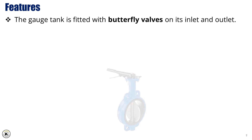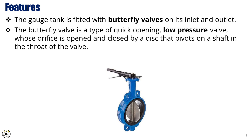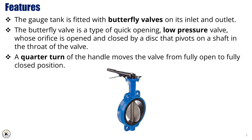The gauge tank is fitted with butterfly valves on both its inlet and outlet. The butterfly valve is a type of quick-opening, low-pressure valve. Its orifice is opened and closed by a disc that pivots on a shaft positioned in the throat of the valve. With just a quarter turn of the handle, the valve moves from a fully open to a fully closed position, making butterfly valves ideal for fast and efficient flow control, especially in well-testing setups where quick response is essential.